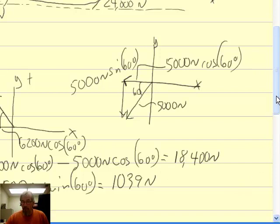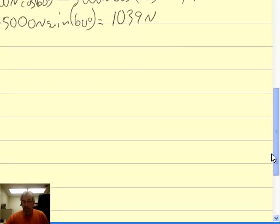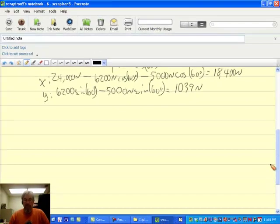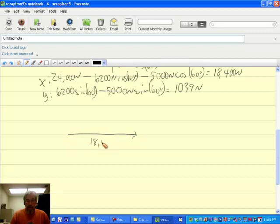So what does that mean about our result? Well, I can just use Pythagorean theorem because x and y are perpendicular to each other, and I've got a right angle here. So here's what my x component of my resultant is. It's 18,400 newtons.